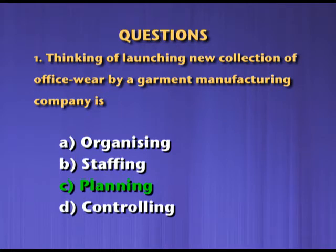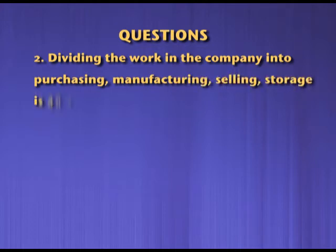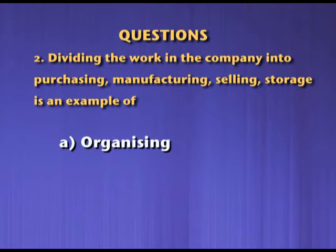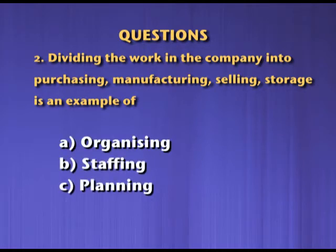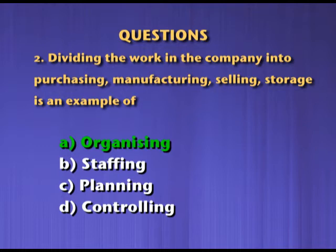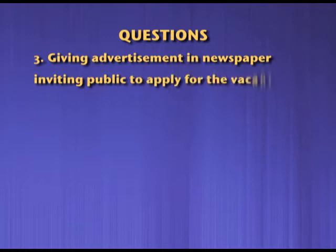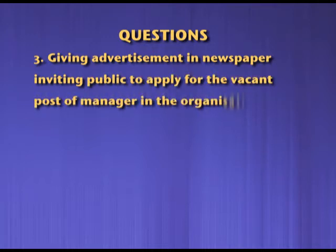Question number two: dividing the work in the company into purchasing, manufacturing, selling, stores — is an example of organizing, staffing, planning, or controlling? Students, your correct answer is B. Staffing.